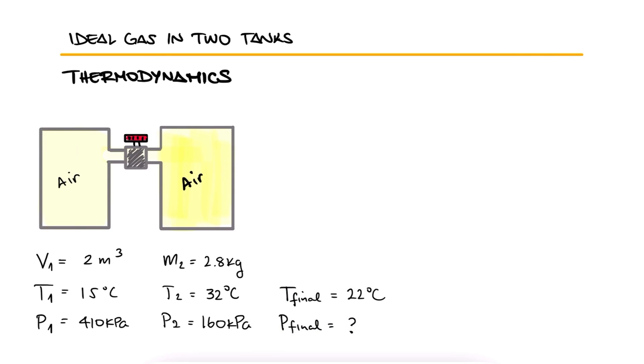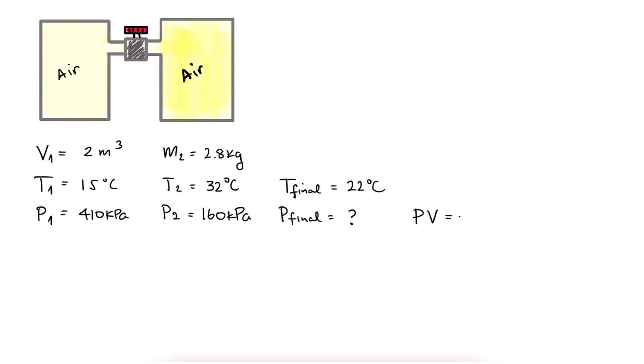The final temperature of the air will be 22 degrees Celsius when it reaches thermal equilibrium. This means that if we look at our ideal gas equation, since air is an ideal gas, we see that we could find the equilibrium pressure if we find the total volume, the total mass, and the gas constant for air.